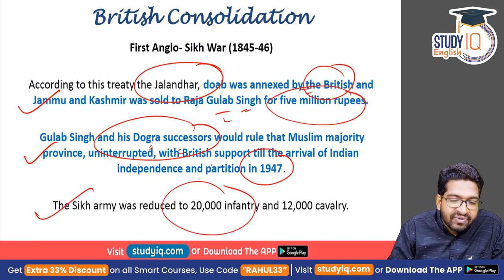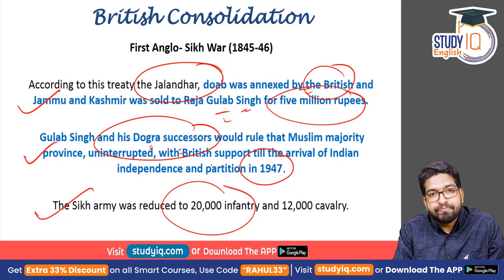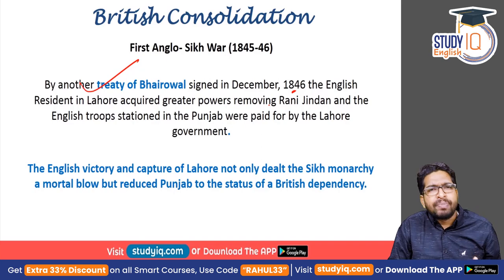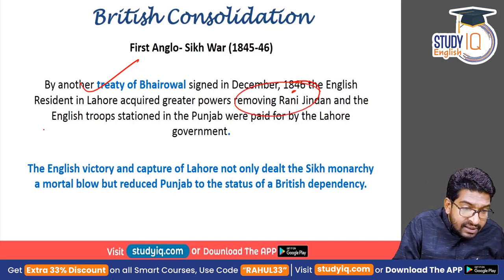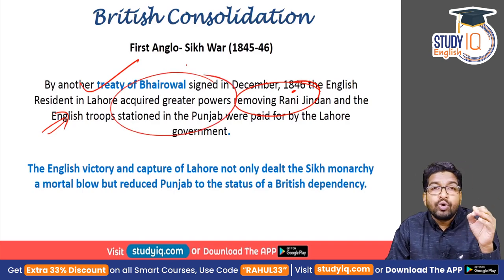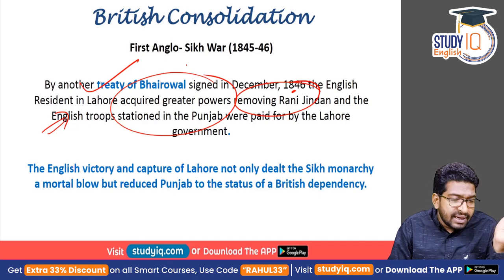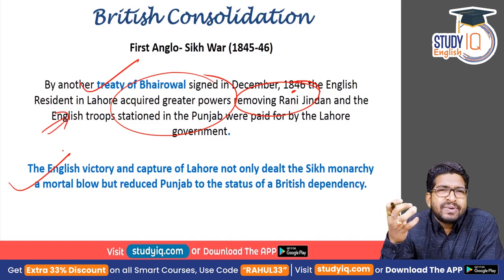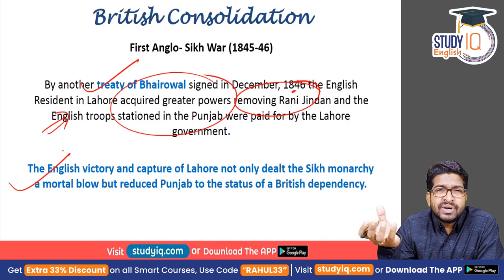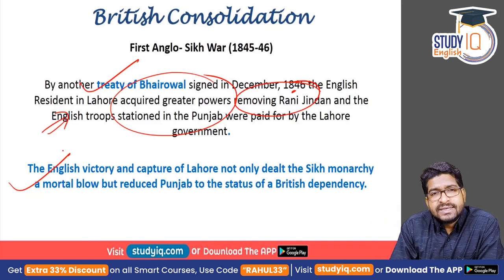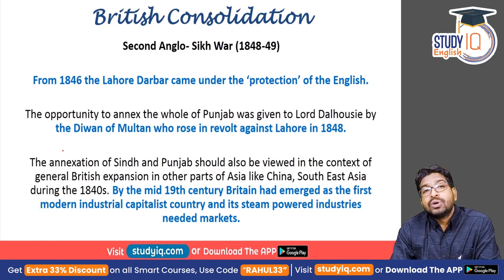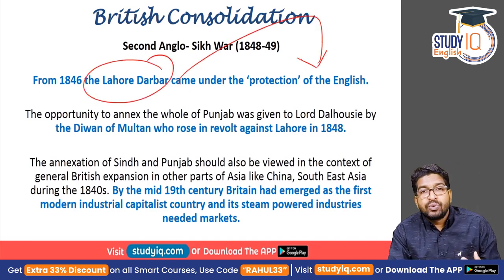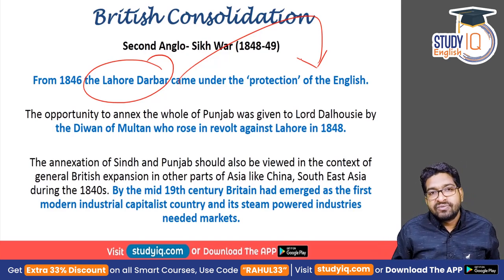The Sikh army was reduced to just 20,000 infantry and 12,000 cavalry. The Treaty of Bhyrowal in 1846 gave the British even more powers — they removed Rani Jindan and their resident was granted increasing authority. It was essentially a subsidiary alliance for Punjab. The English capture of Lahore dealt a severe blow to Sikh monarchy and reduced Punjab to a dependency of British India. Very soon, the Second Anglo-Sikh War also began, as the Lahore Darbar had come under British protection and the British were looking for an opportunity to remove the Sikh empire entirely.